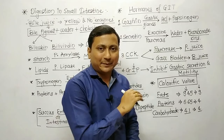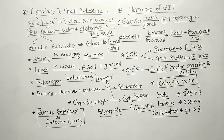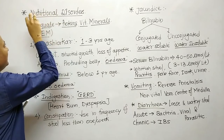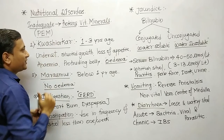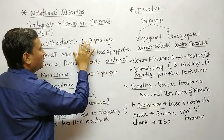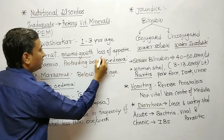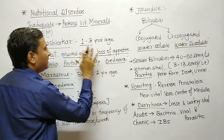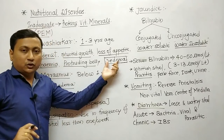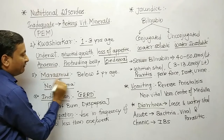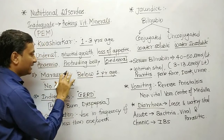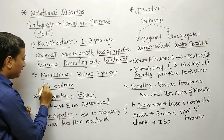Nutritional disorders are caused due to inadequate amounts of proteins, vitamins and minerals in the diet; also known as PEM (protein energy malnutrition). Kwashiorkor mainly affects children of age group 1 to 3 years. Symptoms include underweight, stunted growth, loss of appetite, anemia, protruding belly, and the characteristic feature is oedema (edema). Marasmus mainly affects children below 1 year of age. Marasmus has similar symptoms but does not show oedema, which is the characteristic feature of kwashiorkor.